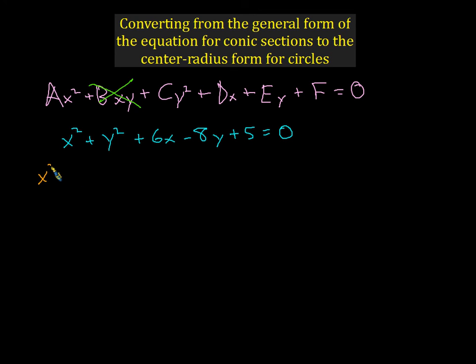First of all, let's put all the x's together. So x squared plus 6x plus, we'll leave room for a little something extra, and then plus y squared minus 8y plus, leave room for a little something extra. Move this 5 over to the other side, make it a negative 5.